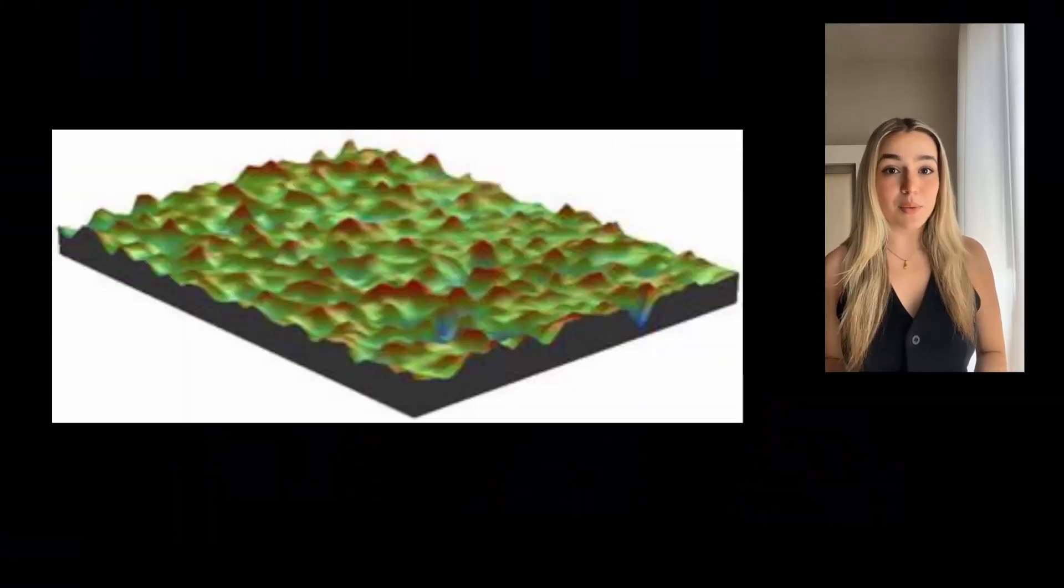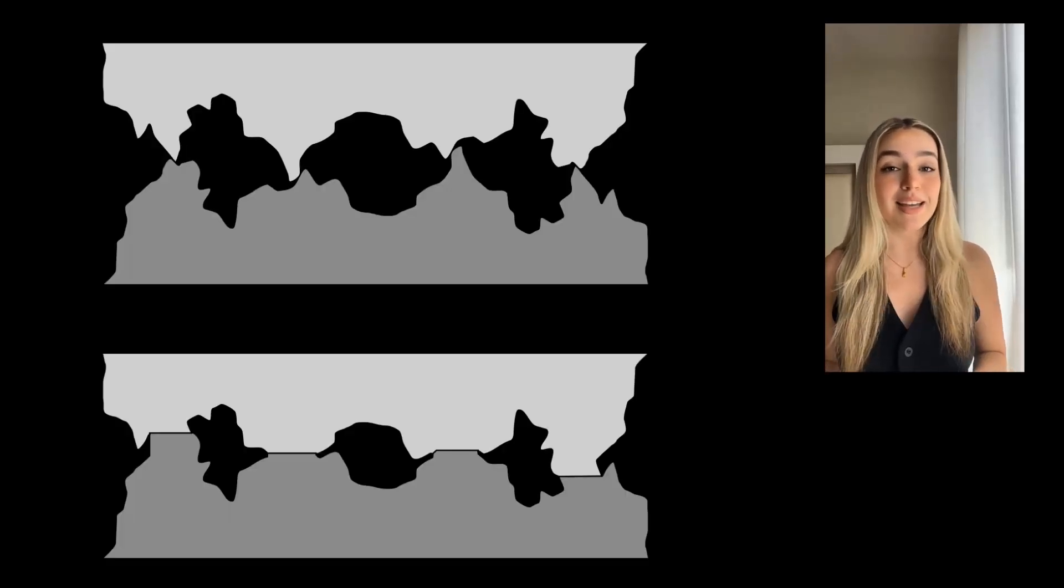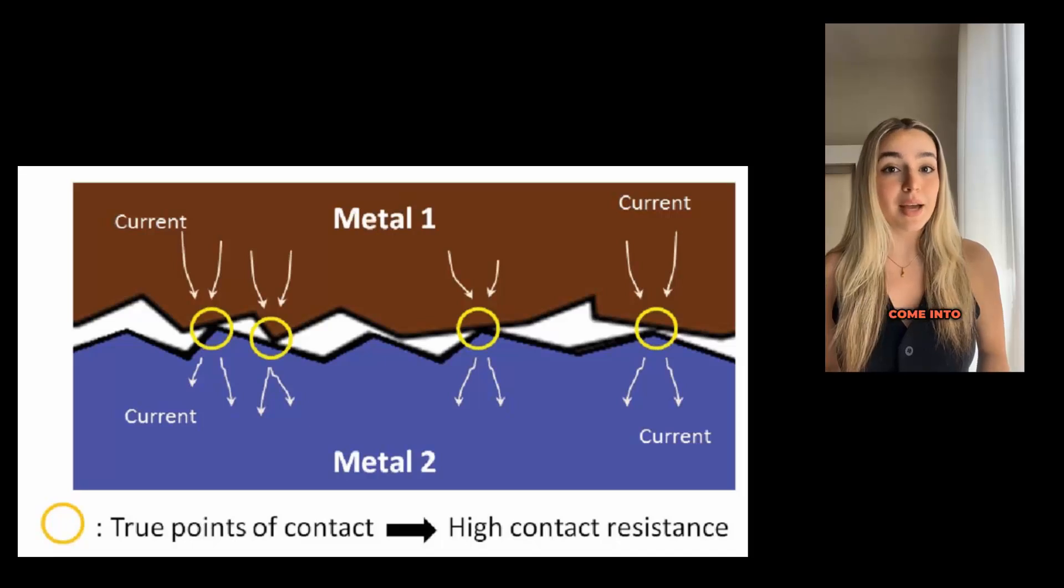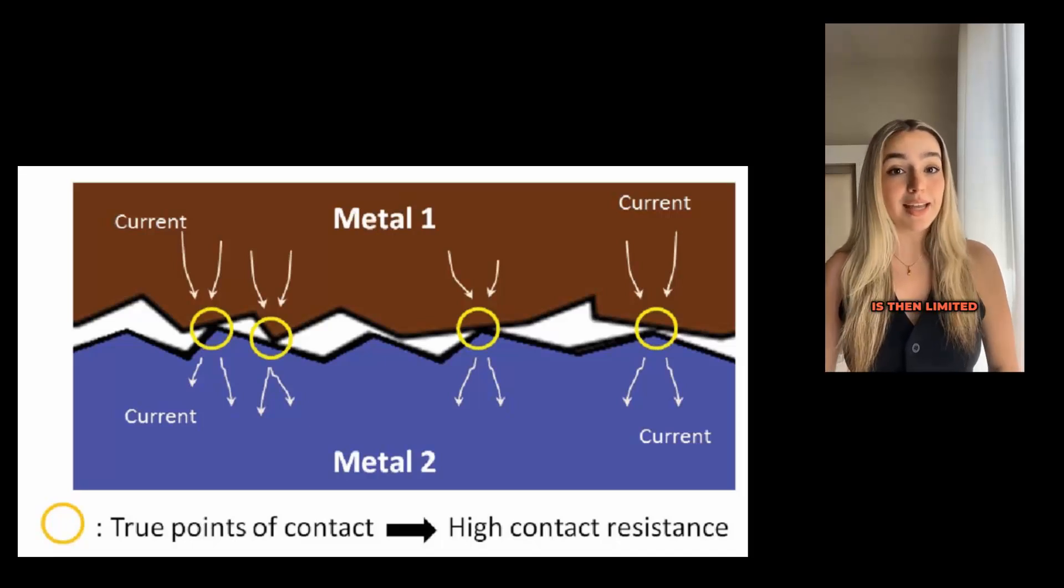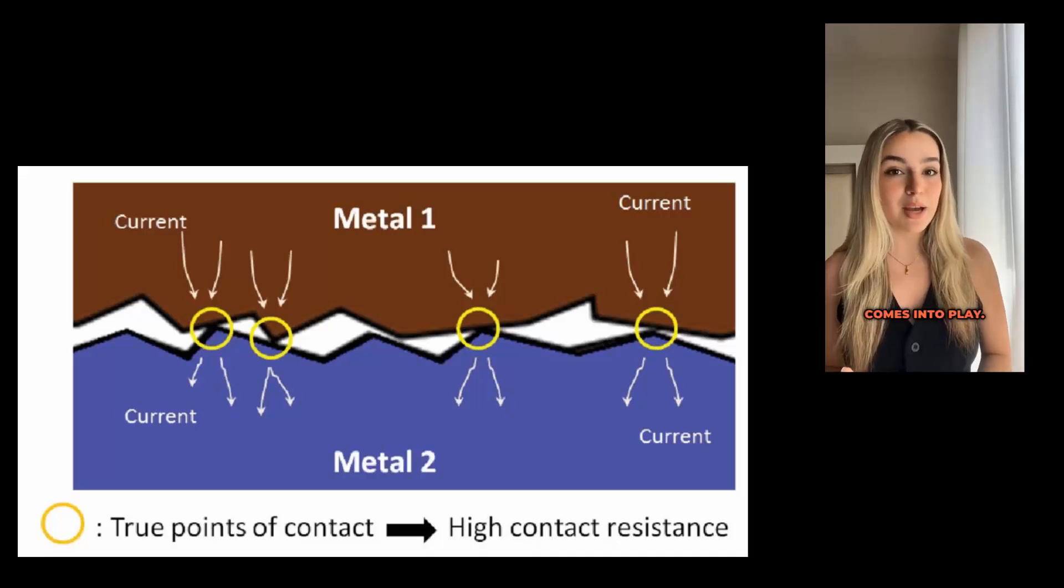These are referred to as asperities and are a major contributor to contact resistance. This is an example of what it's like when two metal surfaces come into contact. Electrical current is then limited to only the points of contact that are being made. This is where our new ceramic comes into play.